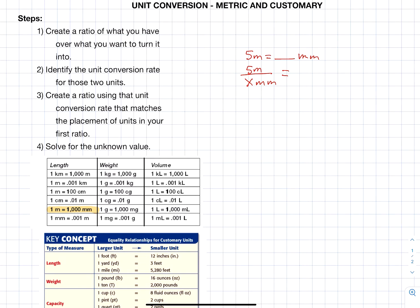So step three, create a ratio using that unit conversion rate that matches the placement of units in your first ratio. So my first ratio, I have meters on the top. I'm going to keep meters on the top and millimeters on the bottom. So I have one meter is one thousand millimeters.